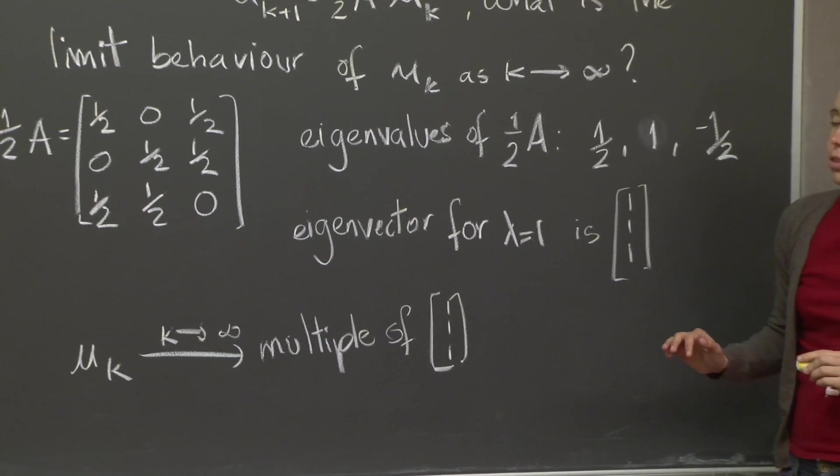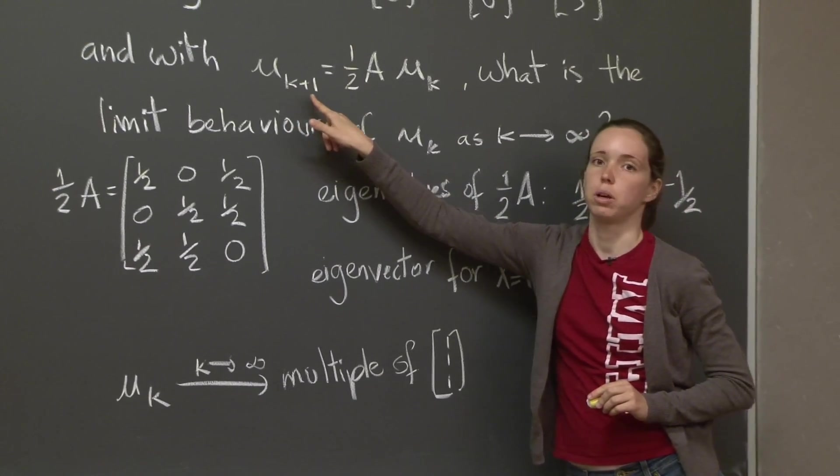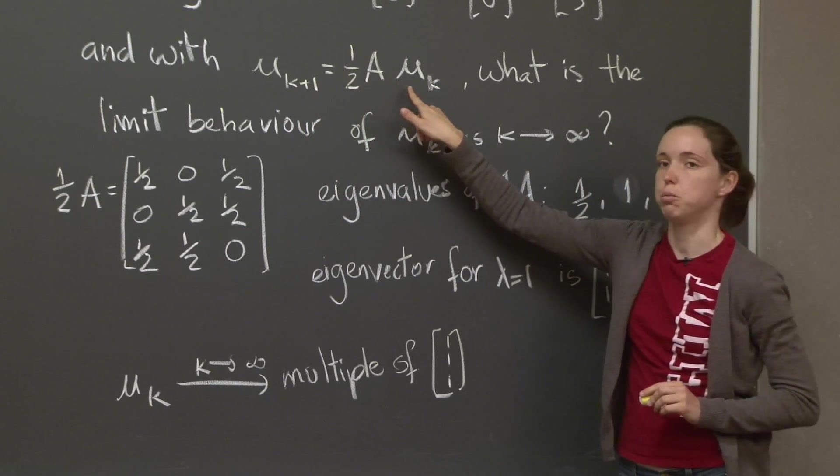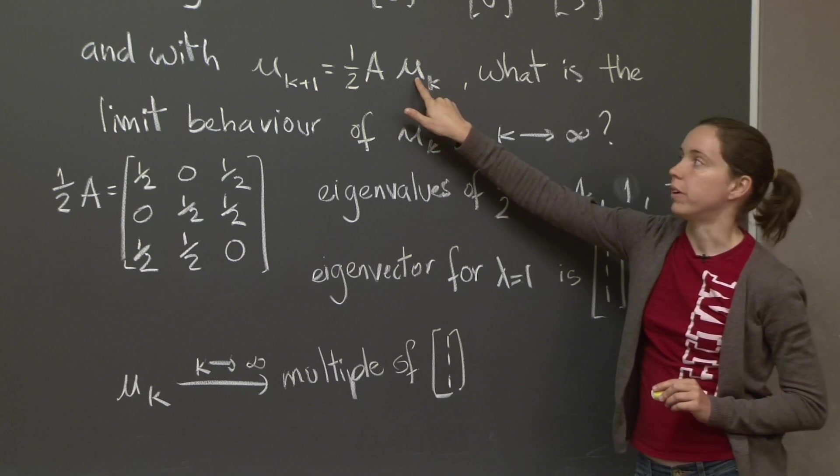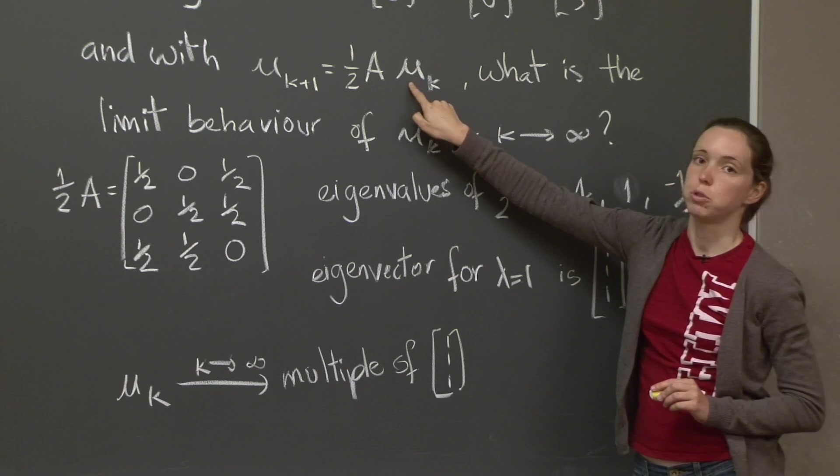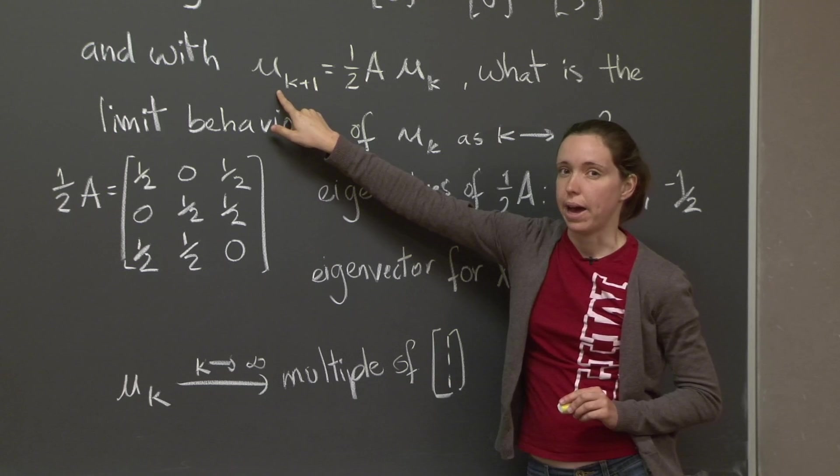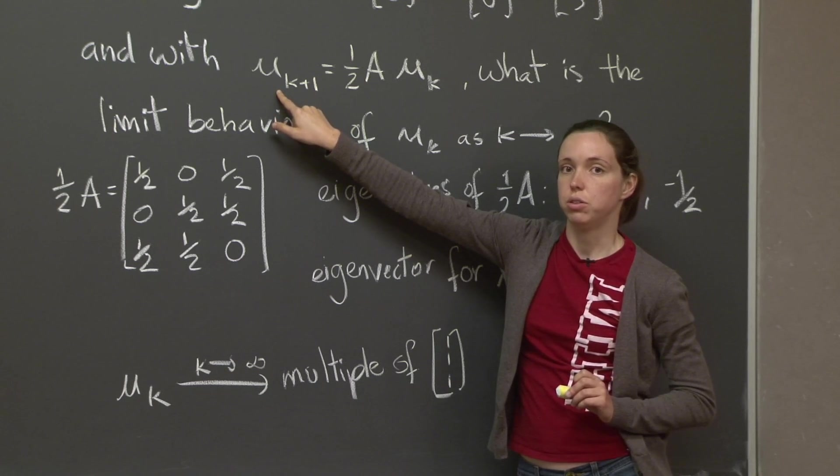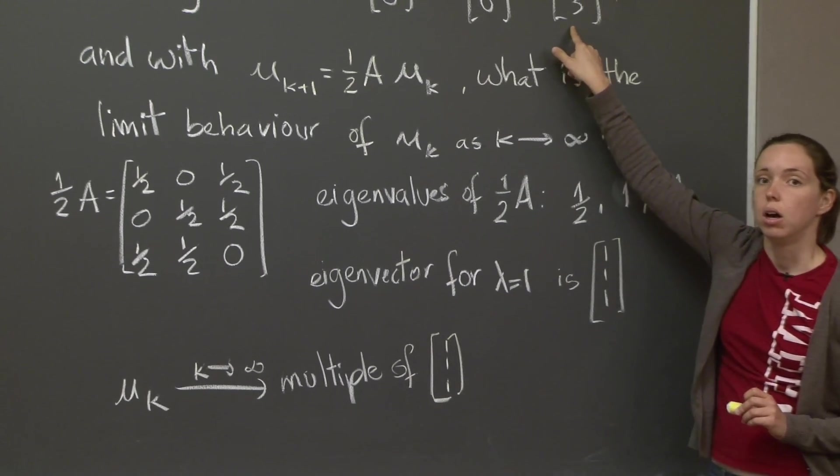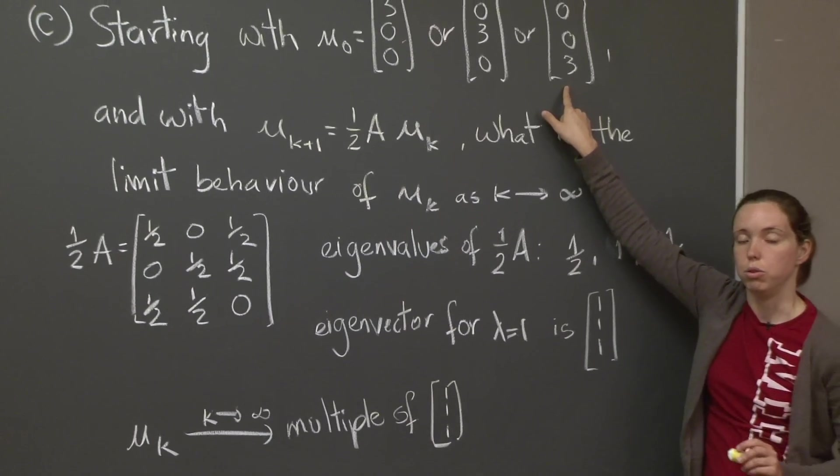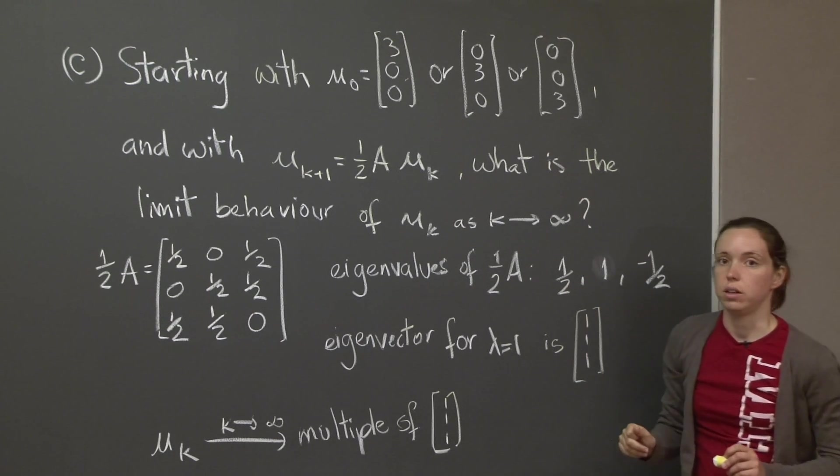How do you know which multiple to use? Well, as usual in Markov matrices, when you do an iteration of the process, when you do u k plus 1 is equal to 1 half of A times u k, that does not change the sum of the entries of the vector u k. So whatever the sum was here, it will still be the same here. If you go all the way back and you start with u 0, whatever the sum of the entries was here, that's what it will be all the way through u 1, u 2, u 3, and so on, all the way to the steady state u infinity.